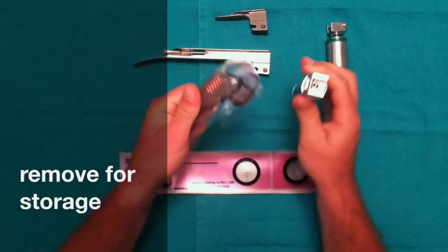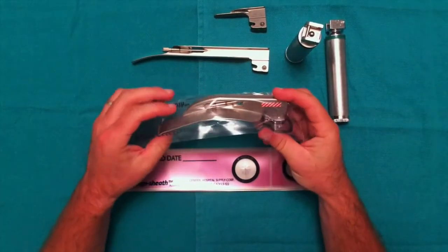To store your blade, simply remove the handle and keep the laryngoscope sheath in place.